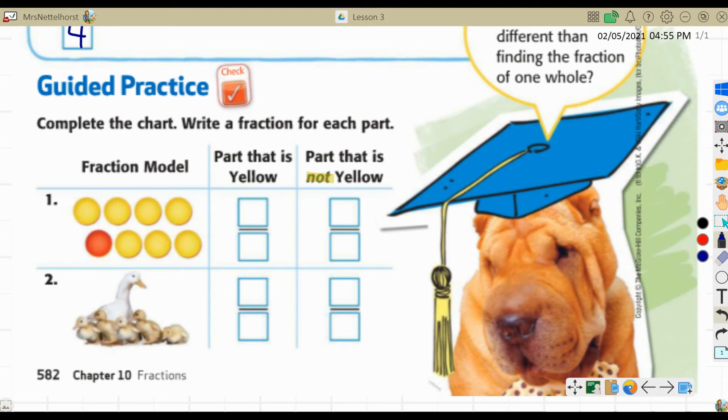So this fraction model number one, first we're going to do the part that is yellow. So I want you to look at how many total parts there are and then how many are yellow. You're going to write it in the second column, that first set of fraction boxes. So pause your video. So the total number of counters is eight. So I'm going to write eight as my denominator, but the parts that are yellow are seven.